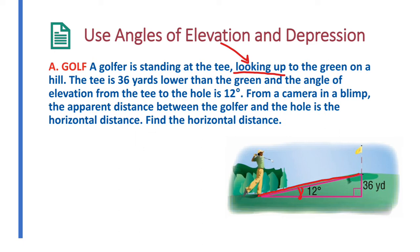The tee is 36 yards lower than the green, and the angle of elevation from the tee to the hole is 12 degrees. So this is 36 yards, this is 12 degrees. Now, from the camera in a blimp, the apparent distance between the golfer and the hole is the horizontal distance. Find the horizontal distance. So how far is this distance here? So we're going to put an x here.